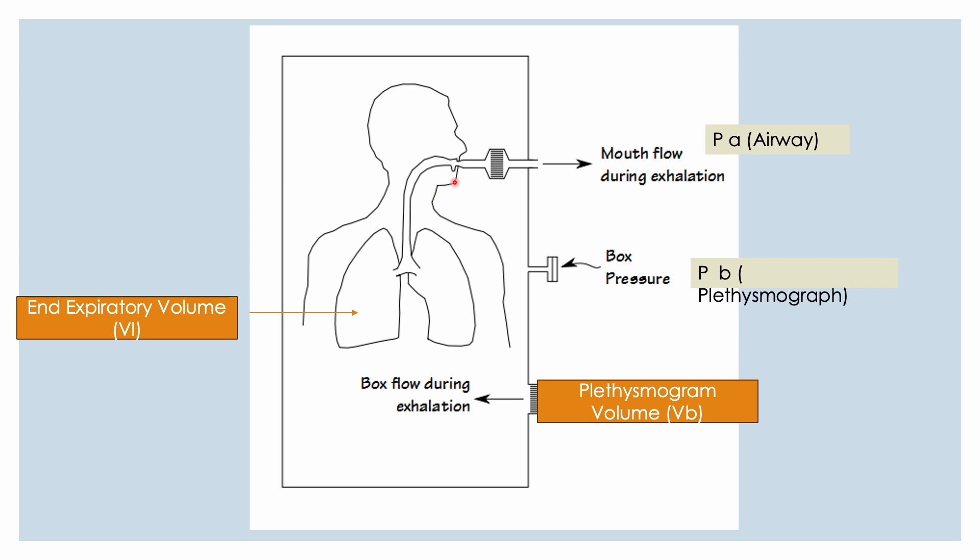So here we are looking at the mouth flow in exhalation. We already know the box pressure which is Pb (plethysmograph pressure). We are trying to ascertain the pressure in the airway, Pa (airway pressure).